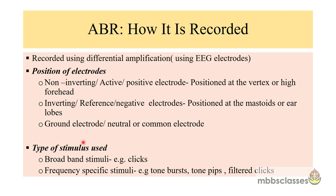Coming to the stimulus — ABR is an auditory evoked potential following an auditory stimulus. There are two types: the first is the broadband stimulus, for example clicks, and the second is frequency-specific stimuli, which includes tone bursts, tone pips, or filtered clicks. When we generally talk about ABR, we mean click-induced ABRs. These click-induced ABRs give a very classical ABR morphology and because we have good normative data to compare our patient results, broadband stimuli — that is clicks — are most commonly used for recording ABR waveforms.